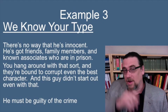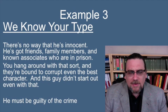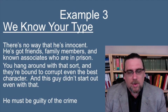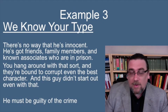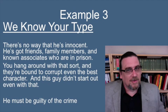Here's a third example: 'We know your type. There's no way he's innocent. He's got friends, family members, and known associates who are in prison. You hang around with that sort and they're bound to corrupt even the best character — and this guy didn't start out with that. So he must be guilty.' His claim of innocence is dismissed based on similarities with others who were guilty. This is a classic case of guilt by association and it's fallacious.